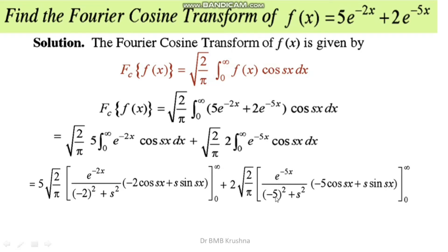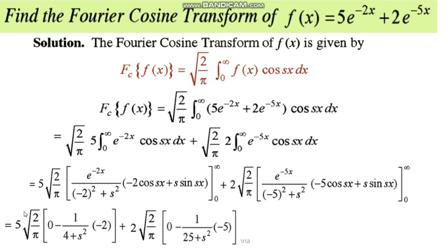For the second integral, applying the reduction formula gives e^(-5x) divided by ((-5)² + s²), multiplied by [(-5)·cosine(sx) + s·sine(sx)], evaluated between limits 0 and infinity. When x is replaced with infinity, e^(-infinity) becomes 0. When x is replaced with 0, e^0 = 1, giving 1/(4 + s²) times [(-2)·cosine(0) + s·sine(0)], where sine(0) = 0.